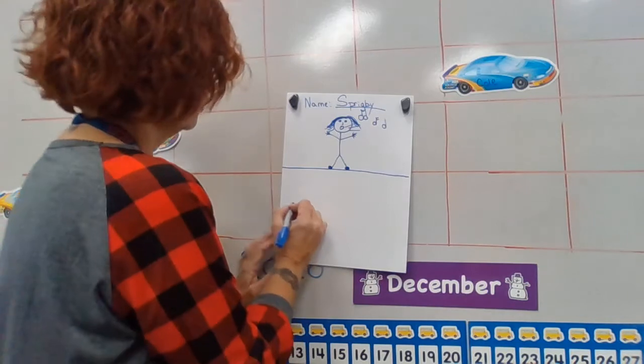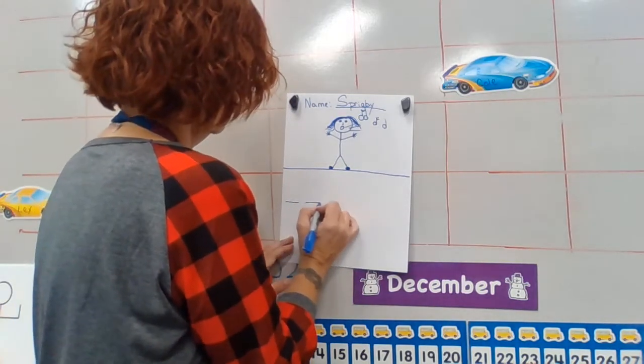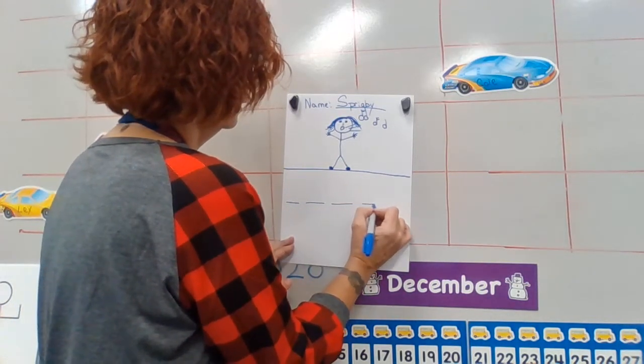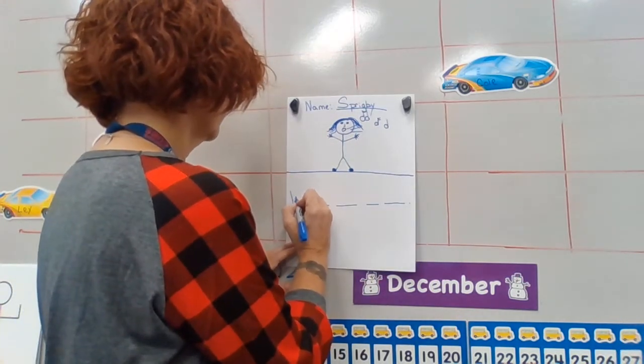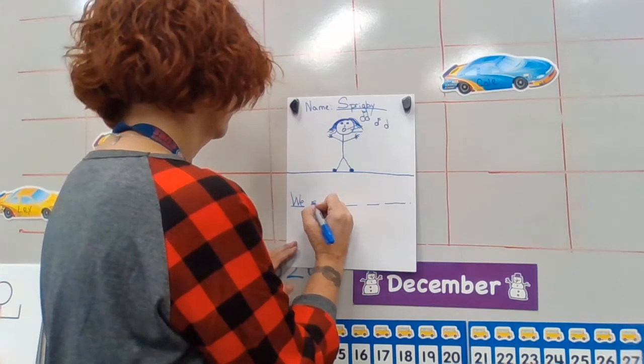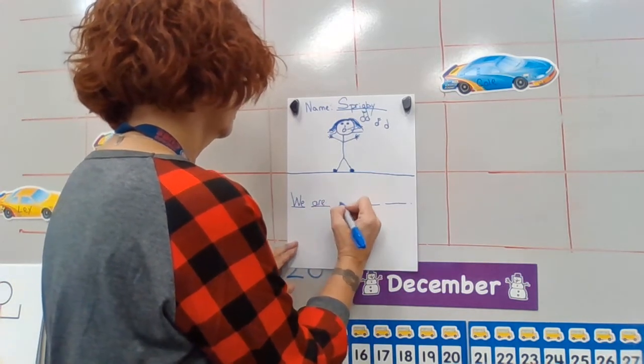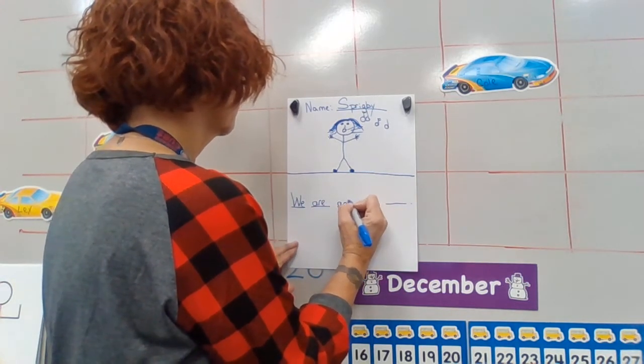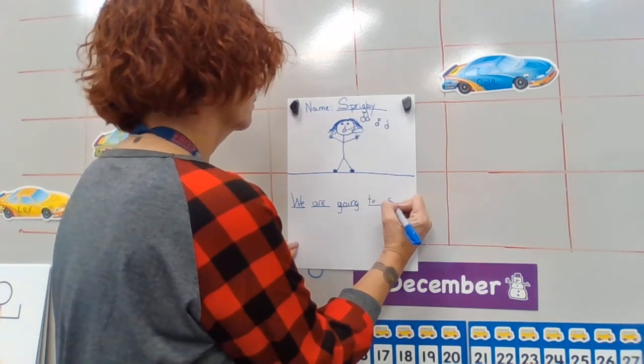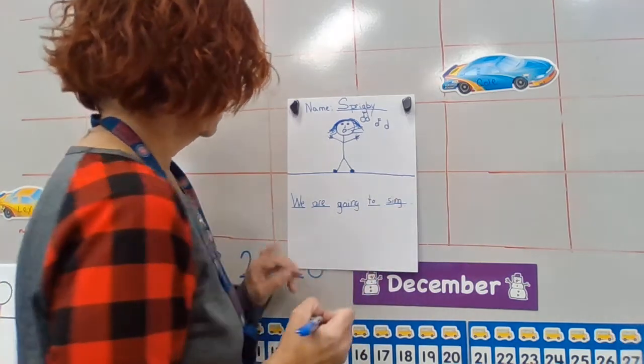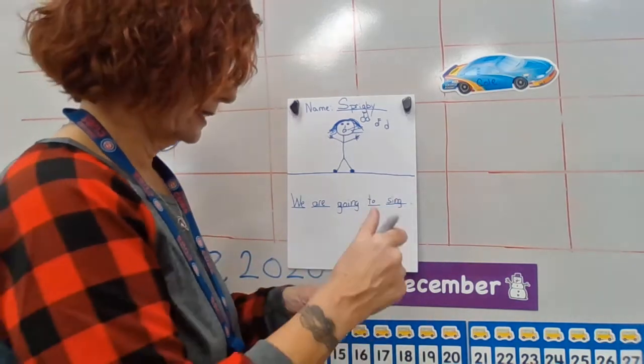Now we need to write our five lines, right? We are going to sing. Period. Nice and slow with me. We are going to sing.